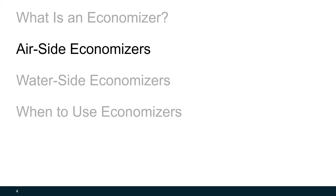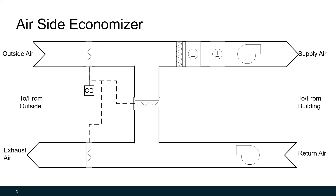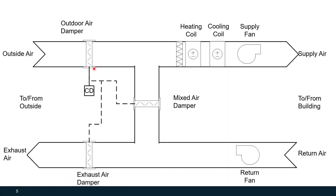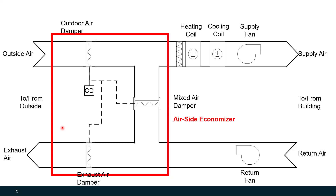So let's start with air side economizers. This is an air handling unit schematic. As you can see, we're bringing in outside air and mixing it with return air, and the air passes through a series of dampers that we use to control the airflow. We then either heat or cool the air as needed, and the supply fan pushes the air into the building. Any return air we don't need is exhausted, which is usually related to the amount of outside air. The three dampers — the outside air damper, the mixed air damper, and the exhaust air damper — make up the air side economizer.